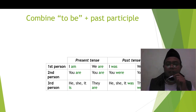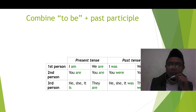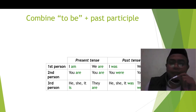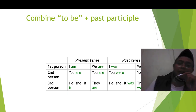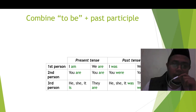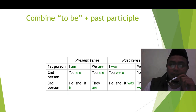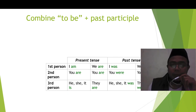Present itu is, am, are. Past tense itu was, were. Kemudian kalau perfect itu pakai been, dan ketika continuous atau progressive menggunakan being.